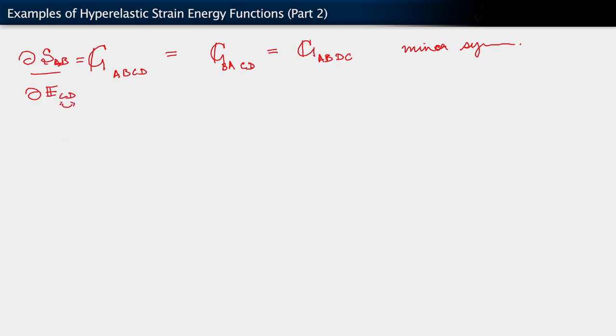So if we reverse those two indices, as we did here, it is symmetric. Likewise, s is symmetric in a and b. So when we reverse the order of those two indices, it is symmetric as well.